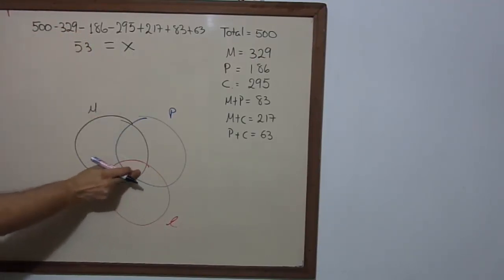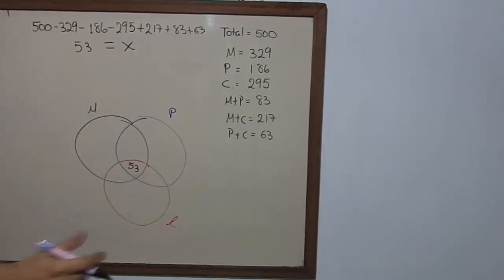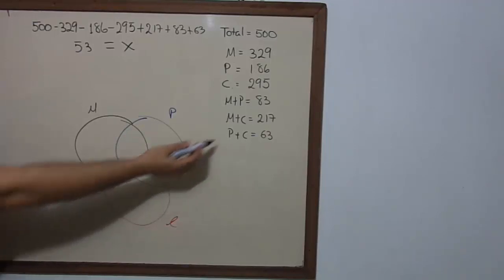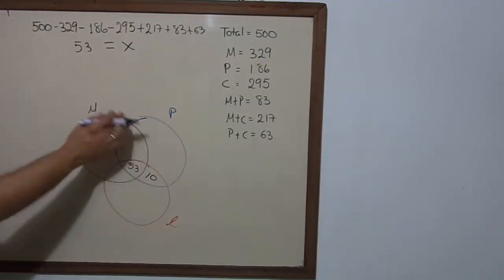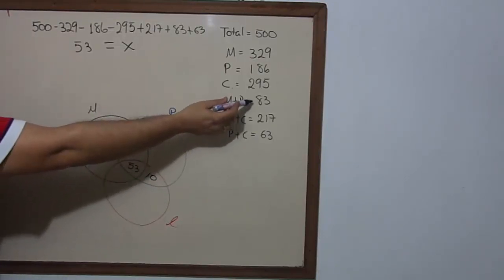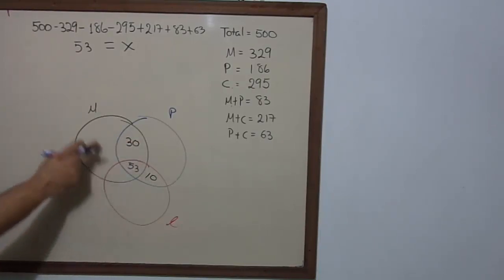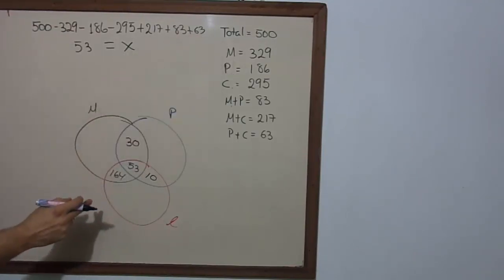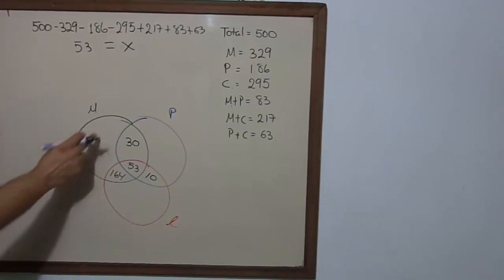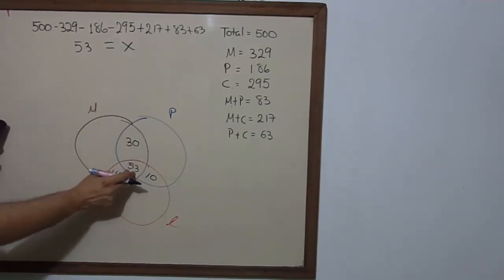Physics and chemistry are 63, so this area is equal to 10. Math and physics are 83, so this area is 30. Math and chemistry are 217 minus 53 — let me get my calculator — 217 minus 53 equals 164.